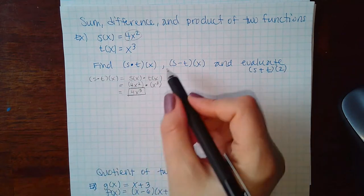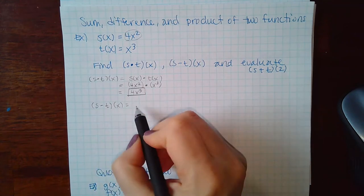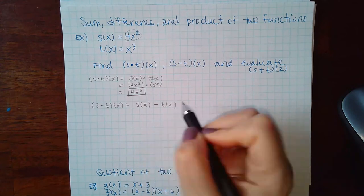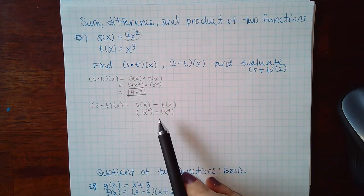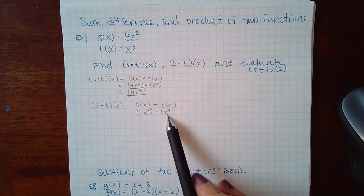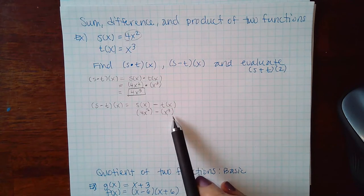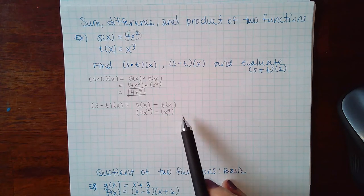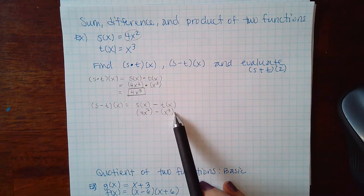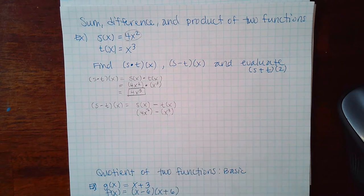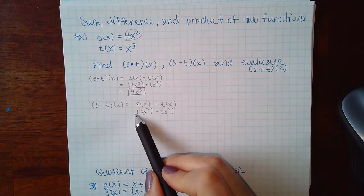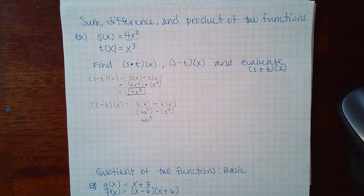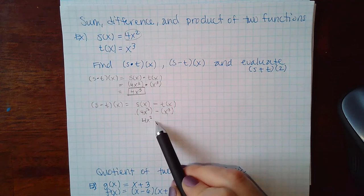For the difference, rewrite it as s(x) minus t(x). s(x) is 4x², t(x) is x³. It is very important that when you plug in the expression you keep parentheses, especially if the expression has more than one term — you would have to distribute that minus sign. Please make sure you use parentheses first, then decide if you need them. Here, minus times x³ gives minus x³, and this is fully simplified since those are not like terms.